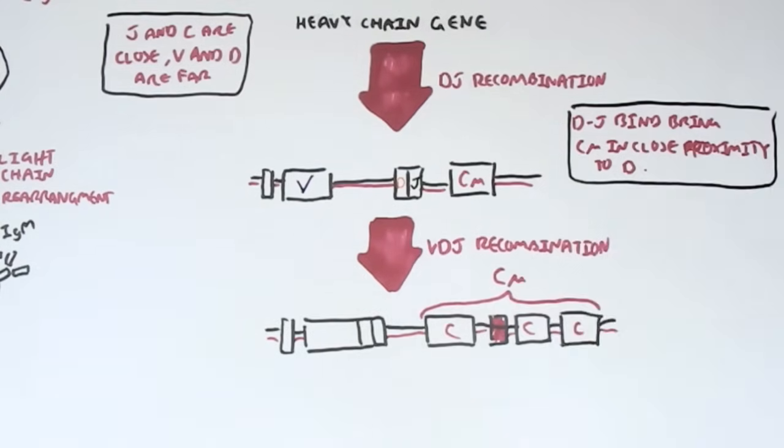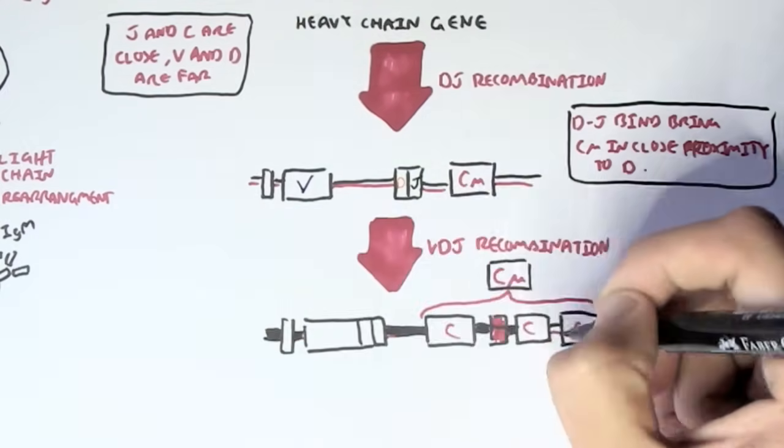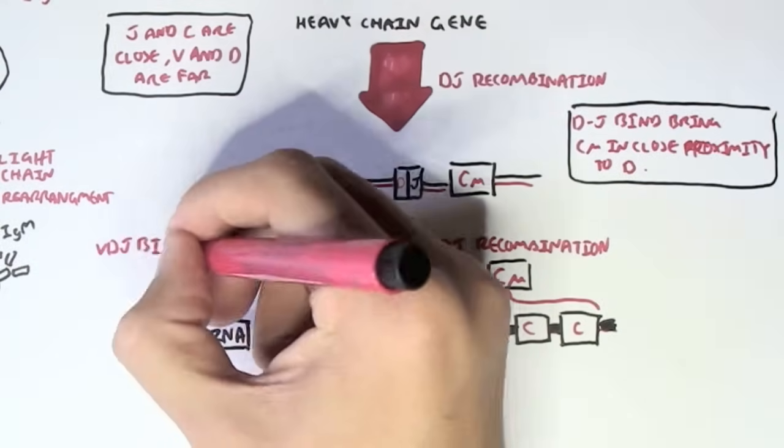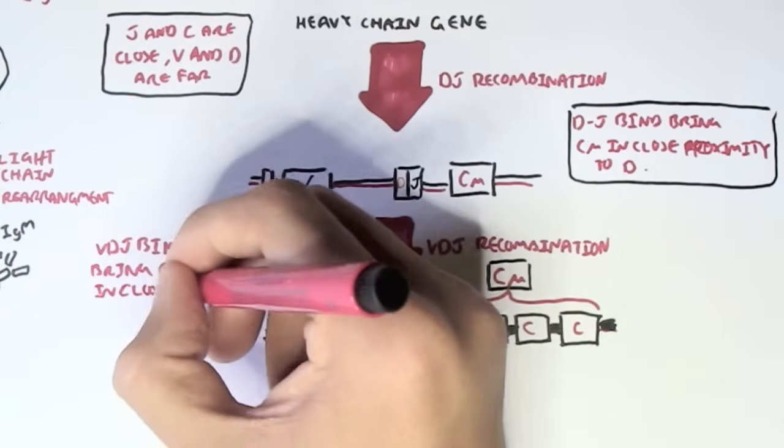Now the constant mu here I have drawn a bit bigger, because a constant mu actually consists of many segments. For immunoglobulin M, there are four constant regions, because the heavy chain consists of four constant regions.